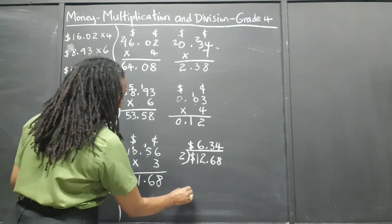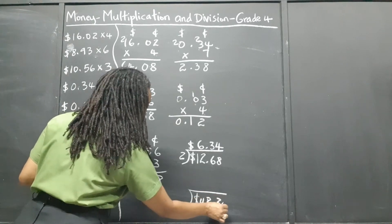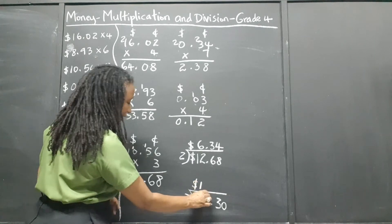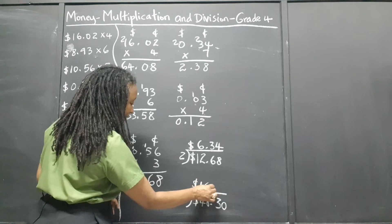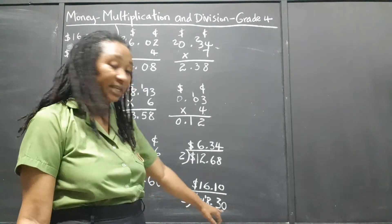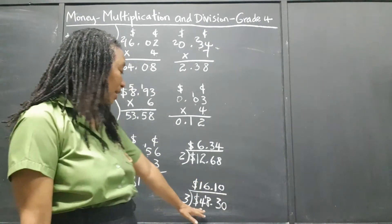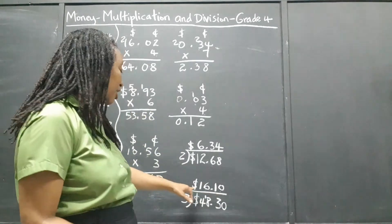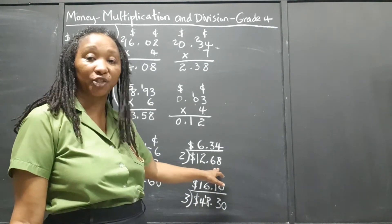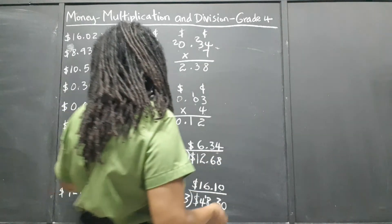$48.30 divided by 3. 3 goes into 4 one time, remainder 1. 3 into 18 is 6 times. 3 into 3 is 1 time. 3 into 0 is 0. So 3 goes into $48.30 is $16.10. So if we're dividing this quantity to share among 3 persons, each person would get $16.10. If we're dividing the $12.68 to share between 2 persons, each person would get $6.34.